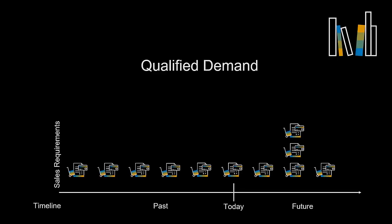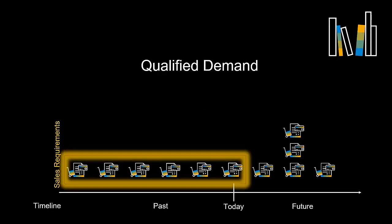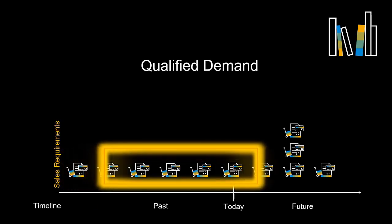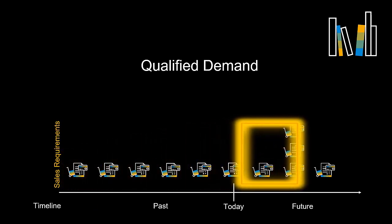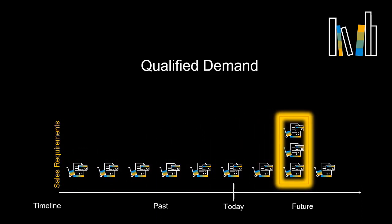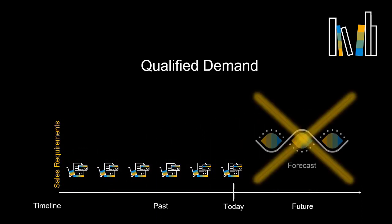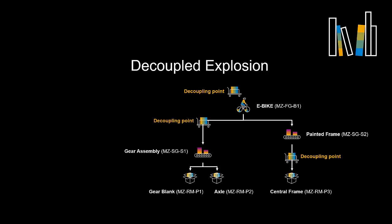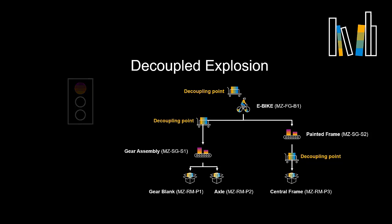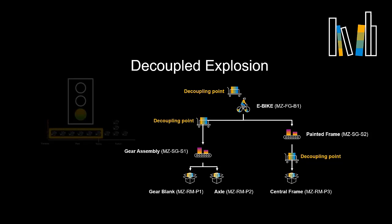Qualified demand is important for DDMRP. It is all sales requirements which are due today or in the past. It also considers future order spikes based on sales requirements. Forecasts are not considered qualified demand. A decoupled explosion means the ability to stop an MRP explosion at a decoupling point, or buffer position. The stopped explosion means that the planning to resupply the buffer position will restart only when there is an actual qualified demand.